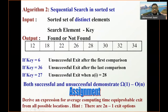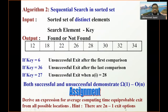We can also derive an expression for average computing time assuming equiprobable exit from all possible locations. There are 2n−1 exit options in total, covering both successful and unsuccessful search outcomes.